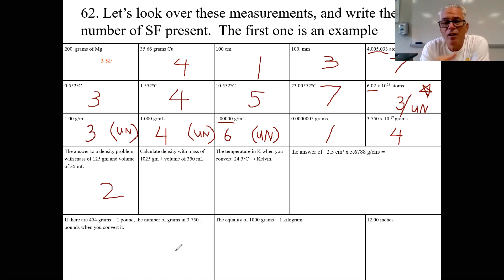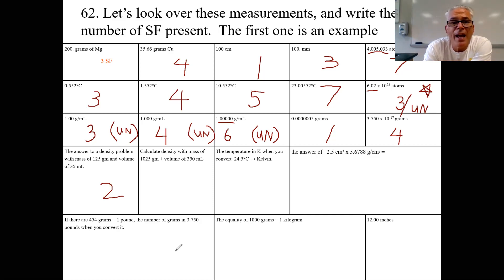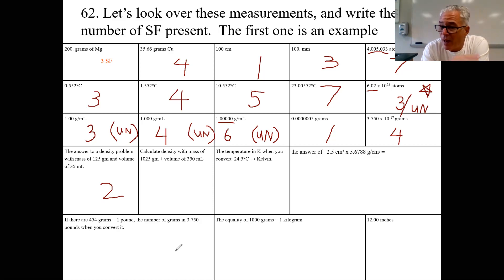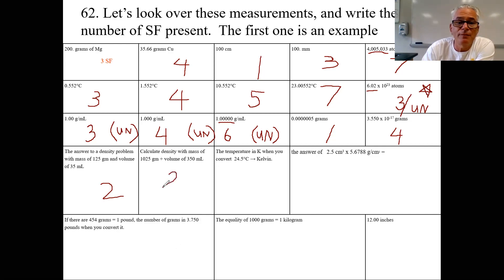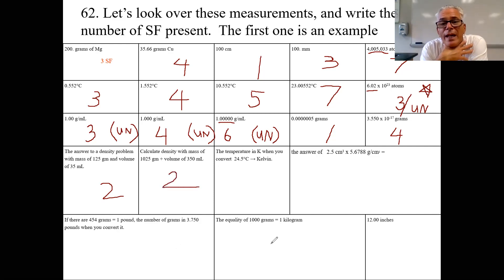Here we have four significant figures in the mass and only two significant figures in the volume — no decimal point. No matter what the calculator says, the answer has only two significant figures.